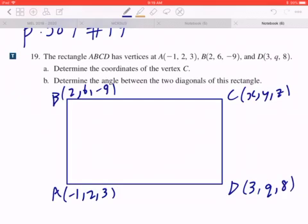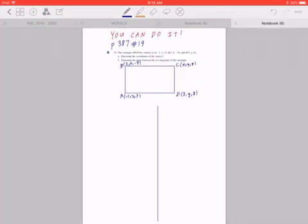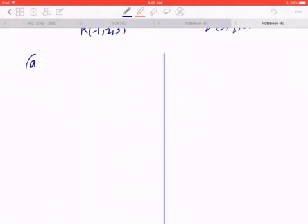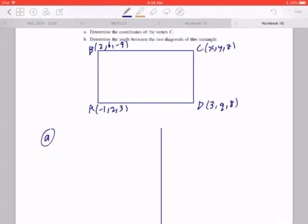So in part A, your goal is to find the coordinates of C. So let's divide this into two different columns, starting with part A. Now, I'm going to leave a bit of space here, I'm going to come back to this. But to find the coordinates of C (X, Y, Z)...